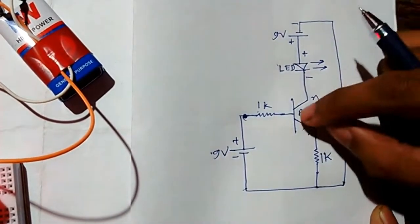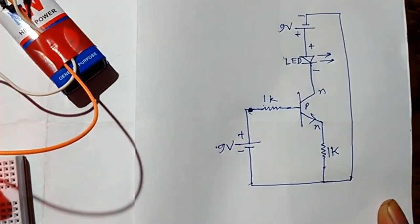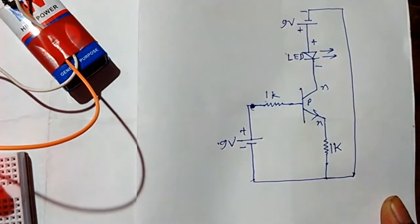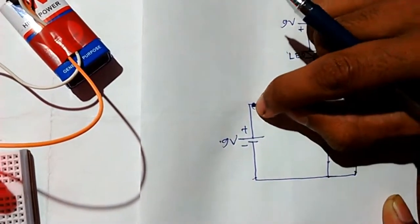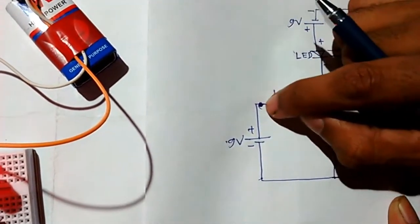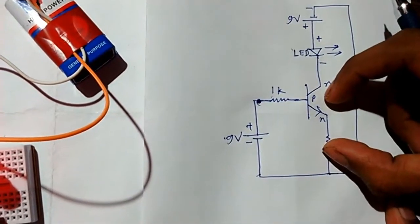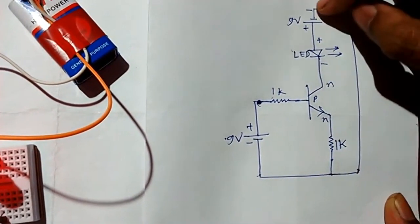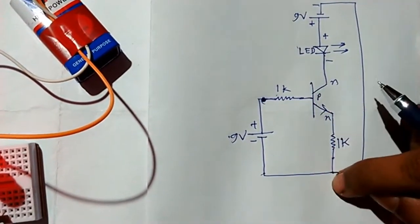We know that when a transistor acts in forward bias, when there is positive voltage across its base terminal, then the transistor will turn on and current will flow from this to this directly.